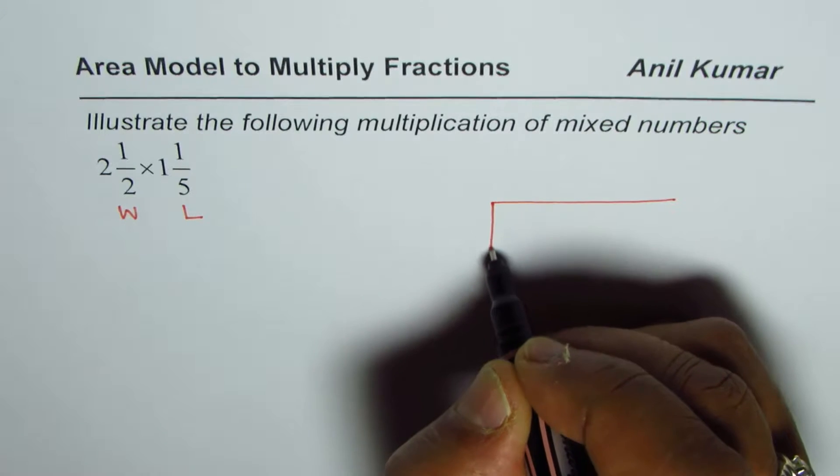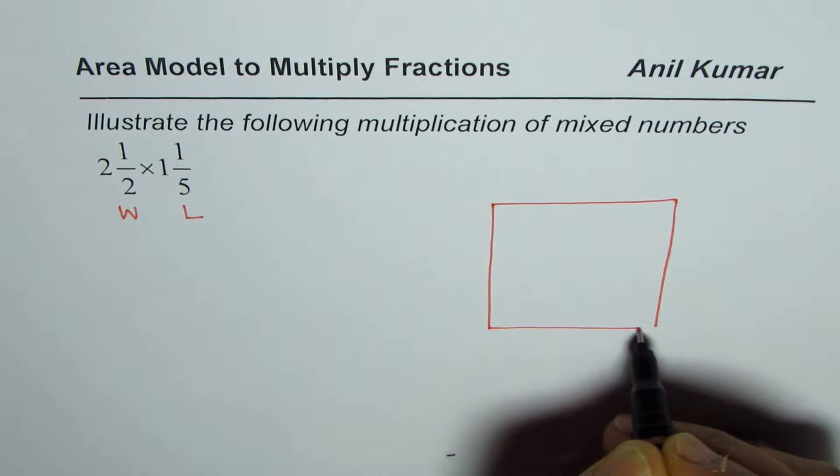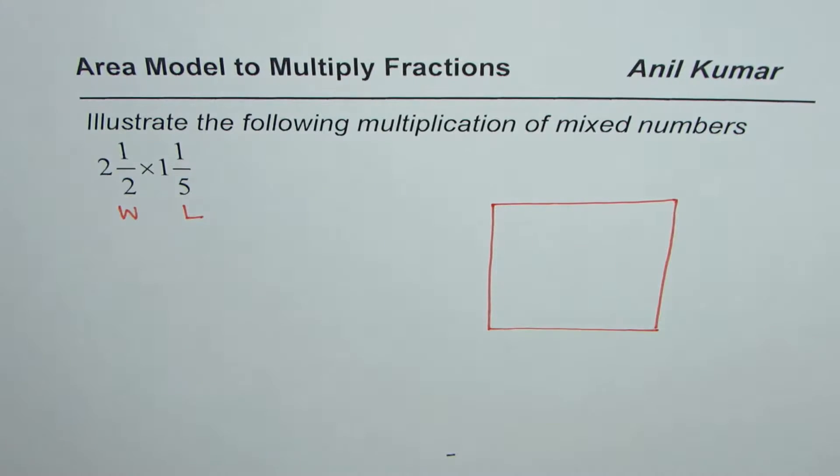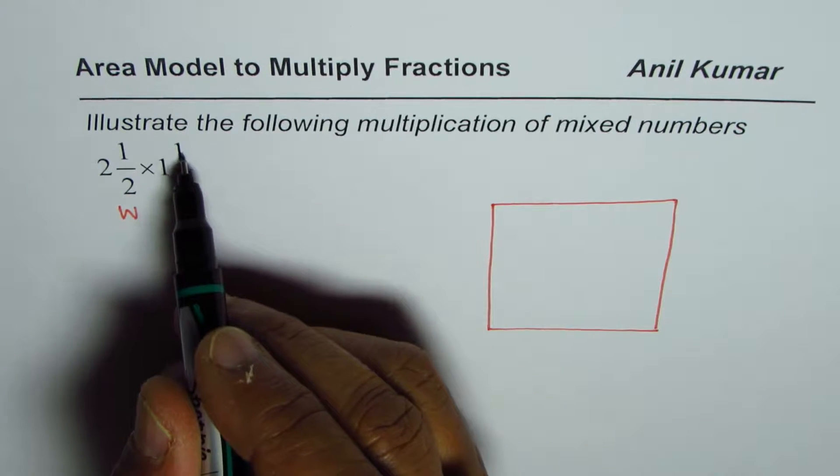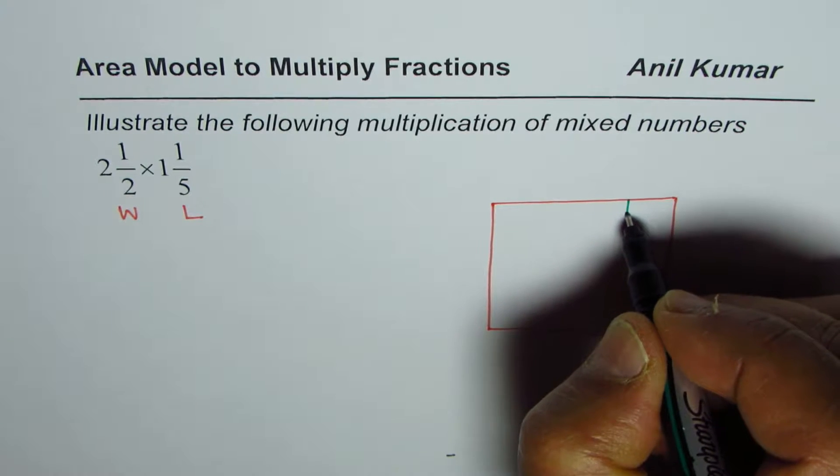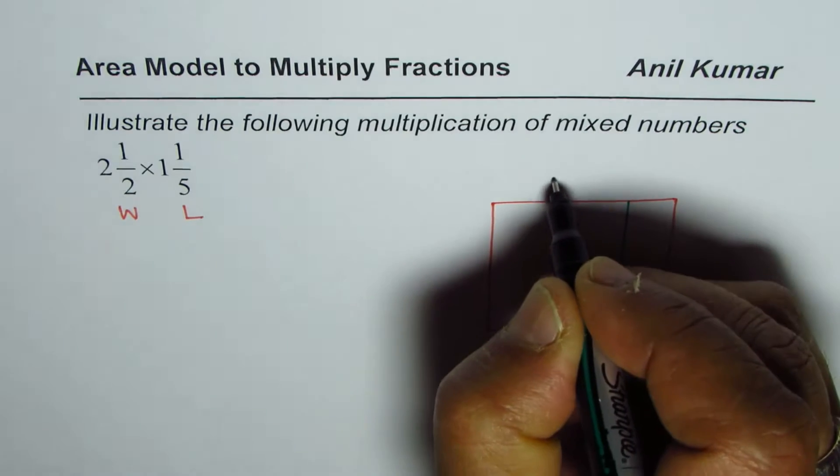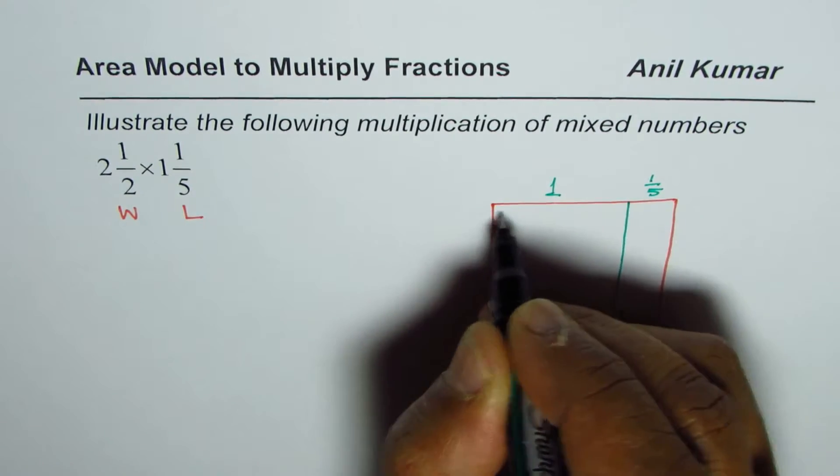I'm just making a rectangle here. The length is 1⅕, so let's say this is 1 for us and that is ⅕. We can divide the length into two parts which is 1 and ⅕.